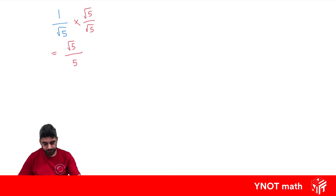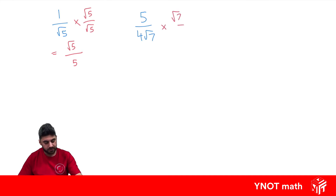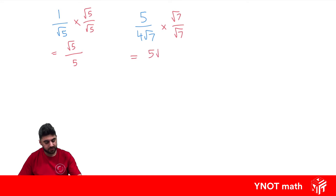What about 5 over 4 root 7? Again, we have a surd in the denominator which we need to get rid of. So this time we need to multiply by root 7 over root 7. You'll notice I didn't multiply by 4 root 7 over 4 root 7 — I could have, but it's unnecessary because all we need to do is multiply by root 7 to rationalize this denominator. Timesing our numerators together, 5 times root 7 gives us 5 root 7. 4 root 7 times root 7 gives us 4 times 7, because root 7 times root 7 equals 7, and we can rewrite this as 5 root 7 over 28.